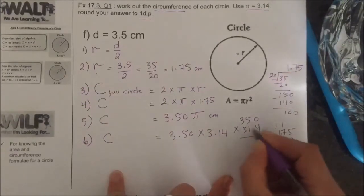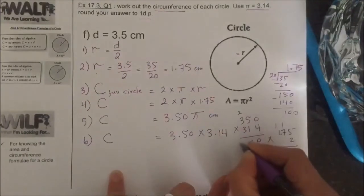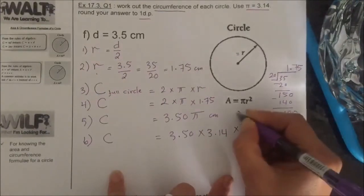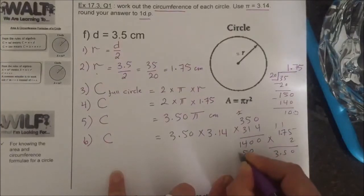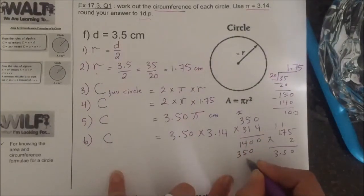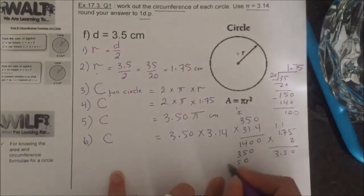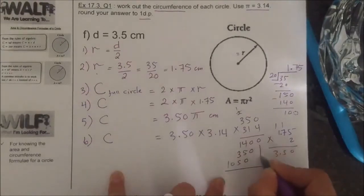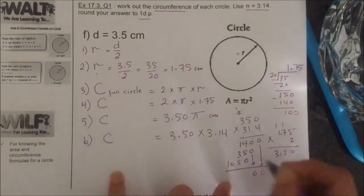4 times 0 is 0, 4 times 5 is 20, 4 times 3 is 12, 2 is 14. Cross this one out. 1 times 0 is 0, 1 times 5 is 5, 1 times 3 is 3. 3 times 0 is 0.